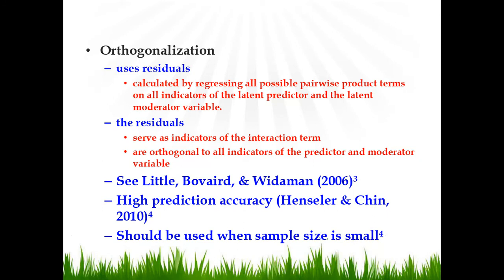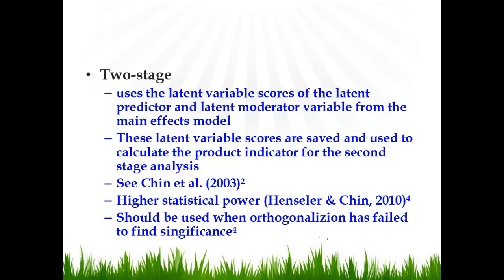The orthogonalization method also has high prediction accuracy and should be used when sample size is small, as per the recommendation of some researchers. The two-stage method is the default method, and some research suggests it should be used when the orthogonalization method has failed to find significance in cases where sample size is small. This method has high statistical power and is the default method.